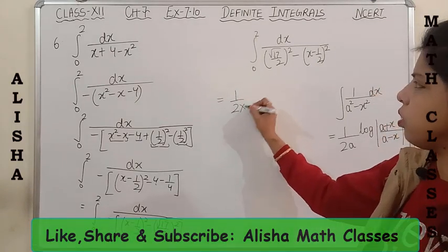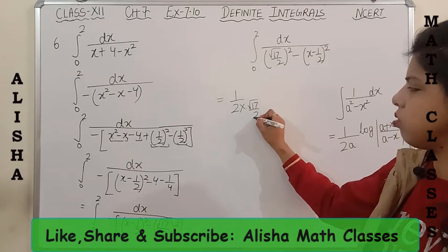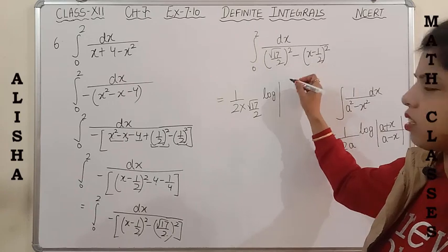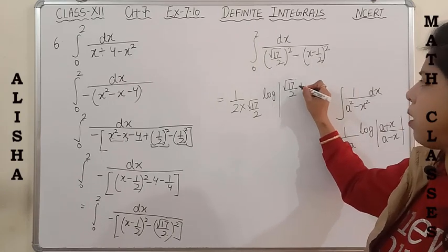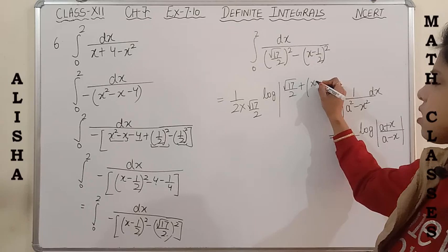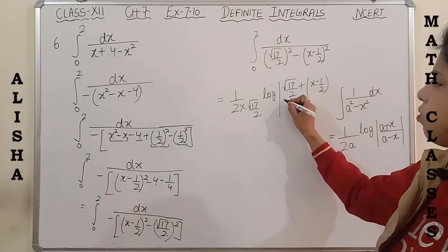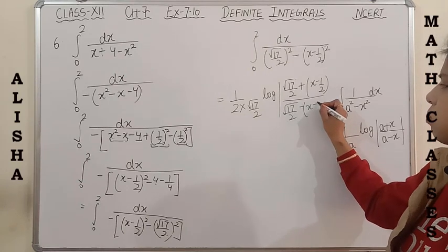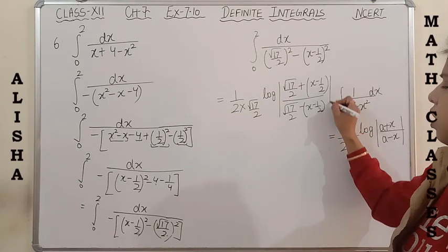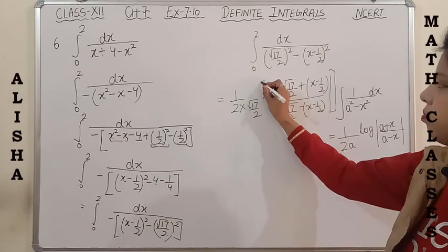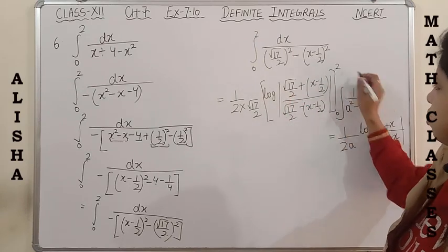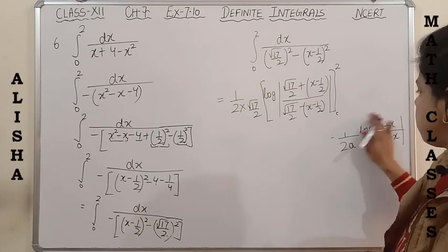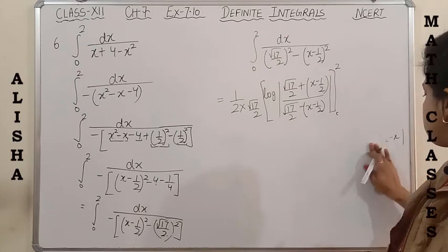Applying the formula, it becomes 1/(2 × √17/2) × log|(√17/2 + (x - 1/2)) / (√17/2 - (x - 1/2))| with limits from 0 to 2. I am erasing the formula since we covered it in exercise 7.5. The 2s cancel, giving 1/√17 × log|(√17 + 2x - 1)/(√17 - 2x + 1)| from 0 to 2.